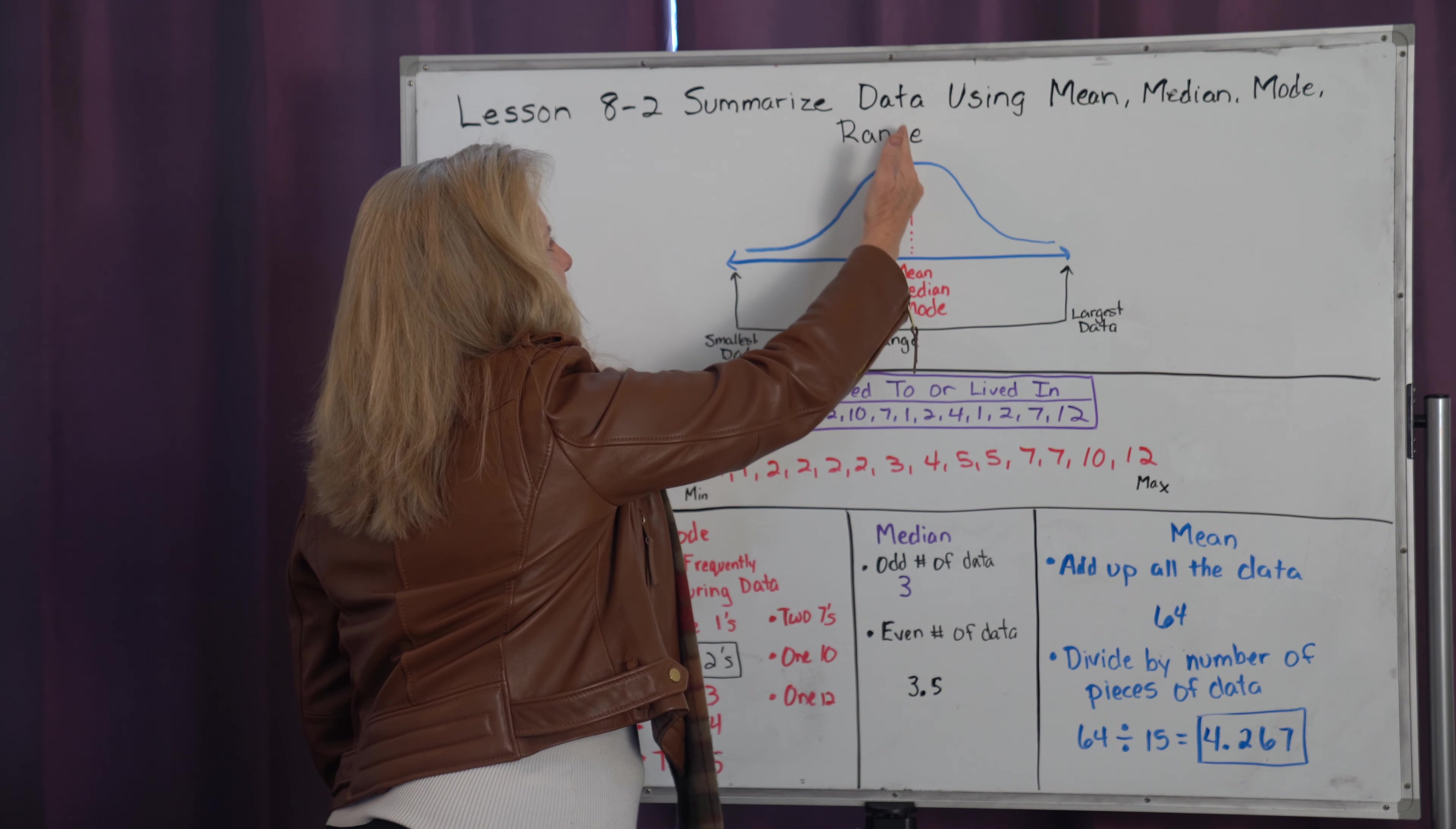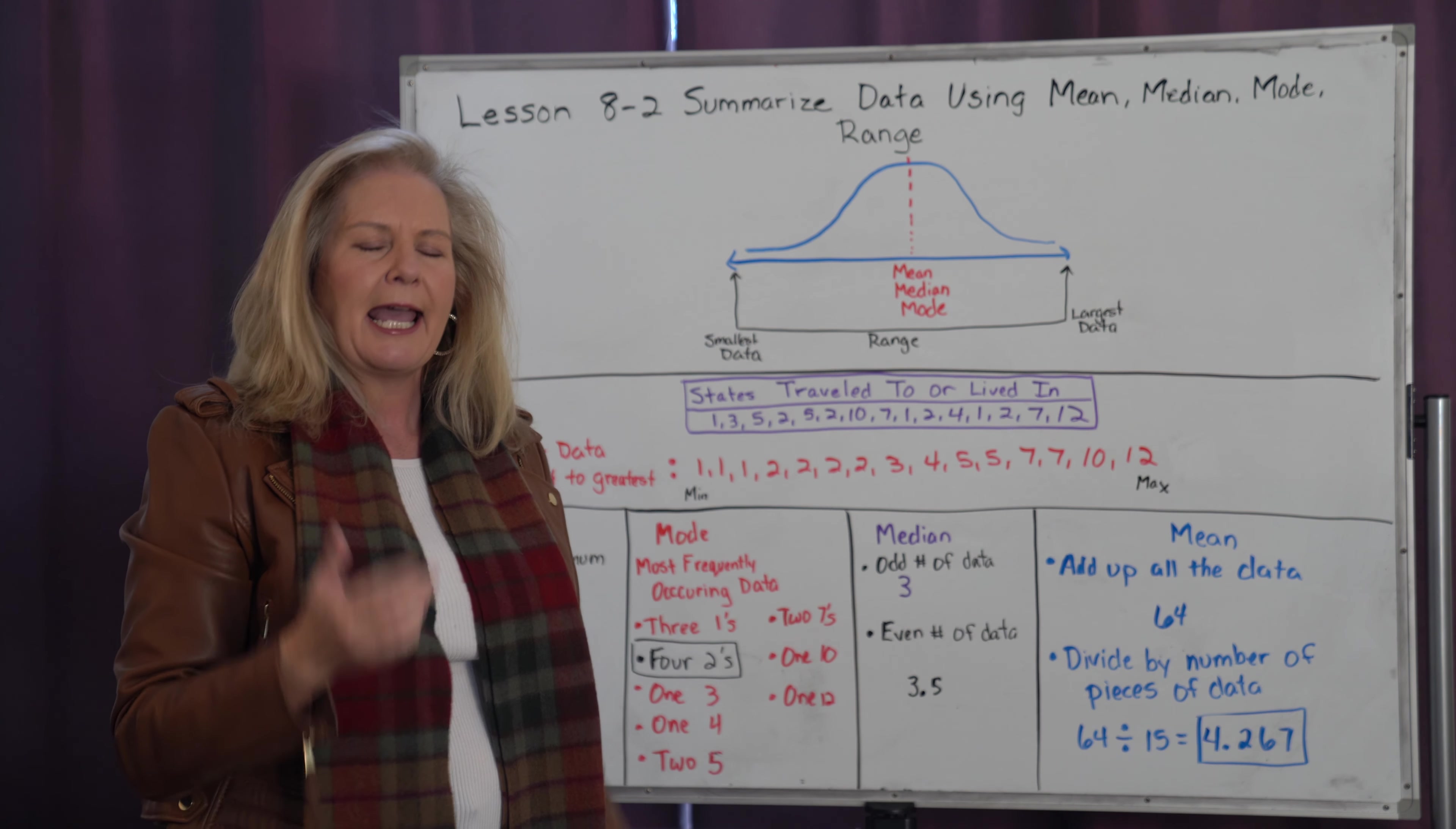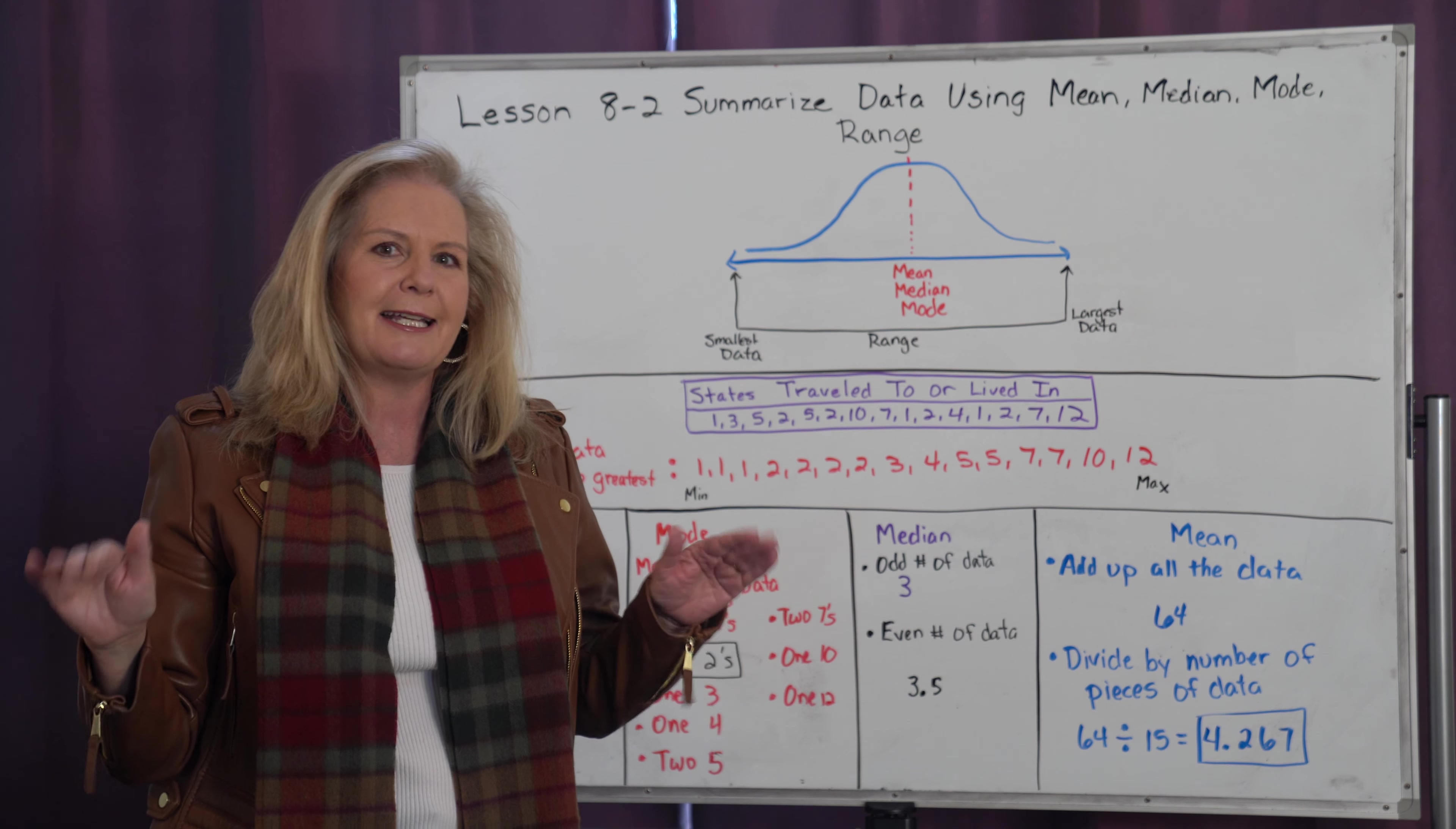If I split that data set down the center, I can look at my mean, my median, and my mode. Those are called measures of central tendency, and the mean, median, and mode should all be very similar numbers that really talk about that center of that data set, but they don't have to be identical.